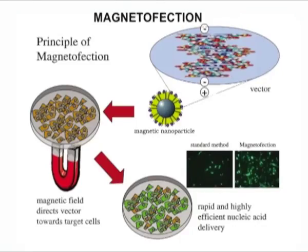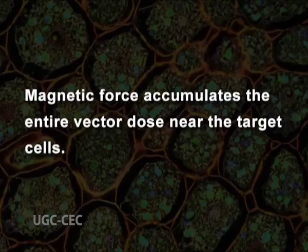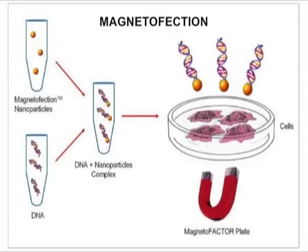Magnetofection is a new method of gene transfer that makes use of a magnetic field for driving the movement of nucleic acids inside the cell. Nucleic acids are associated with cationic magnetic nanoparticles made up of biodegradable iron oxide coated with cationic molecules. Coupling magnetic nanoparticles to gene vectors greatly enhances uptake of these vectors; they are transported and concentrated under the influence of a magnetic field. Magnetic force accumulates the entire vector dose near target cells, which take up the genetic material by endocytosis or pinocytosis. This method does not cause any harm to the cells, and the percentage of transfected cells is very high compared to other methods.